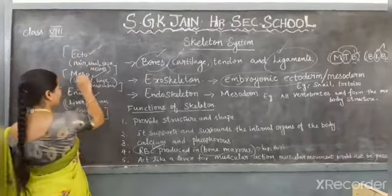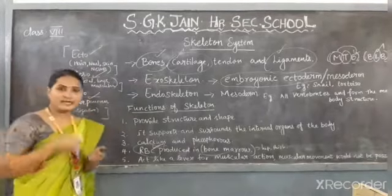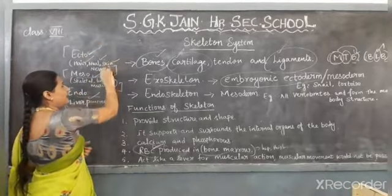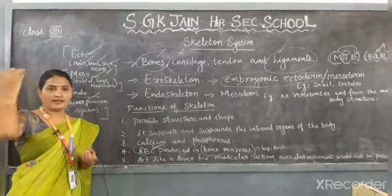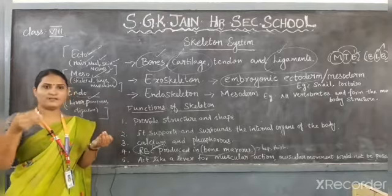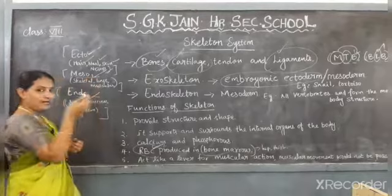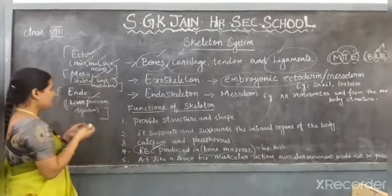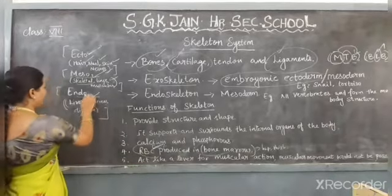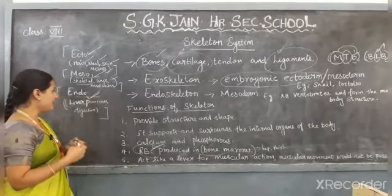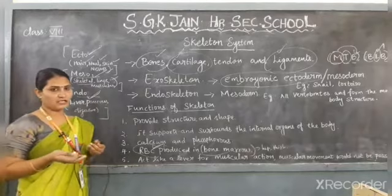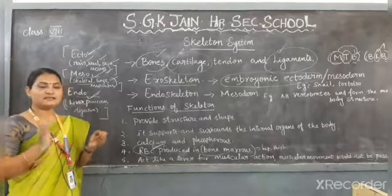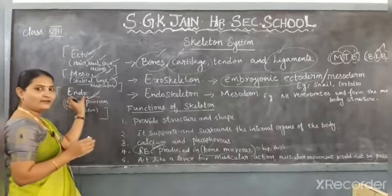Ectoderm is the external layer, mesoderm is the middle layer, and endoderm is the internal layer. The ectoderm gives rise to hair, nail, skin, and nerves. The mesoderm — the middle layer — gives rise to the skeletal system, lungs, and muscular system. So the skeletal system originates from the mesoderm. The endoderm, the internal layer, gives rise to the liver, pancreas, and digestive system. These parts originate from the endoderm layer.